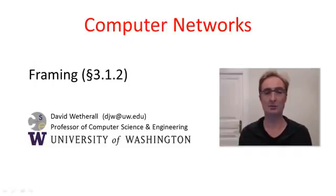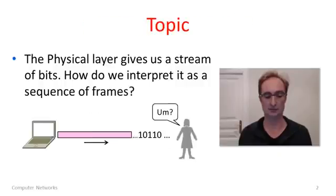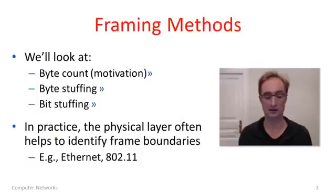G'day viewers. In this segment we'll talk about framing messages which are sent across the link layer. The need for framing arises because the physical layer delivers a stream of bits. We've worked hard with modulation to turn signals into a stream of bits, but of course a stream of bits is not really what we want. We would like to be able to send a sequence of messages called frames across the link layer. So we need some way to delimit the start and end of those messages. That's what framing is all about.